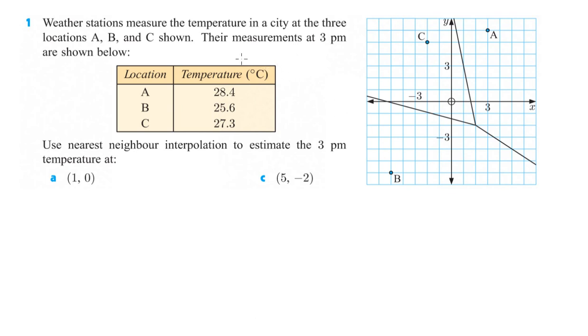First one we're going to take a look at here is number 1. Weather stations measure the temperature in a city at three locations, A, B, and C, shown. Their measurements at 3 o'clock are shown as such. Use the nearest neighbor interpolation to estimate the 3 p.m. temperature at (1, 0). So (1, 0) is right here. The site that's closest to this would be site C. So we would take the 27.3 degrees Celsius should be the estimate for that, for the nearest neighbor.